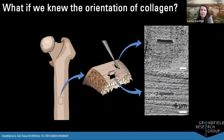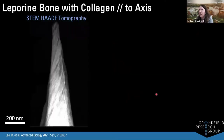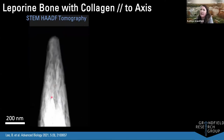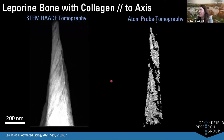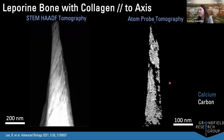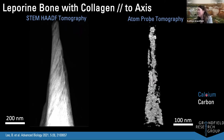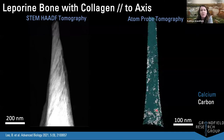We wanted further studies where we knew the orientation of bone. Taking a long bone like a femur or tibia and slicing it in different directions gives very different resulting structures. We used this to create samples for atom probe tomography in which we knew the collagen orientation ahead of time. My PhD student Brian Lee created these samples, first doing electron tomography to confirm collagen orientation along the length of the sample, then performing atom probe tomography to look at the resultant 3D structure.